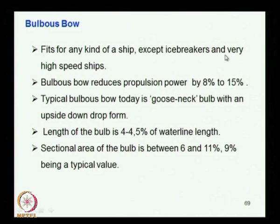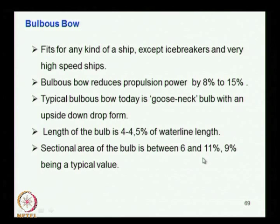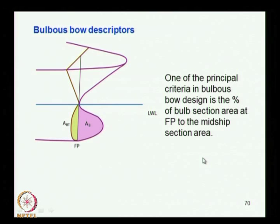We know that there is a usual power saving of 8 to 15 percent with a properly designed bulb. The extent of the bulb is usually 4 to 4.5 percent from the forward perpendicular, and the bulb area at the forward perpendicular cross-section is about 6 to 11 percent of the midship section area — normally about 9 percent.